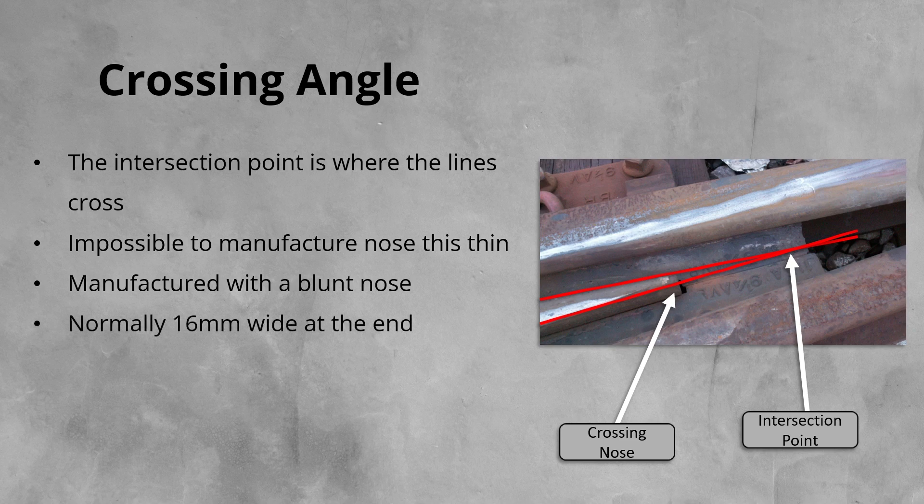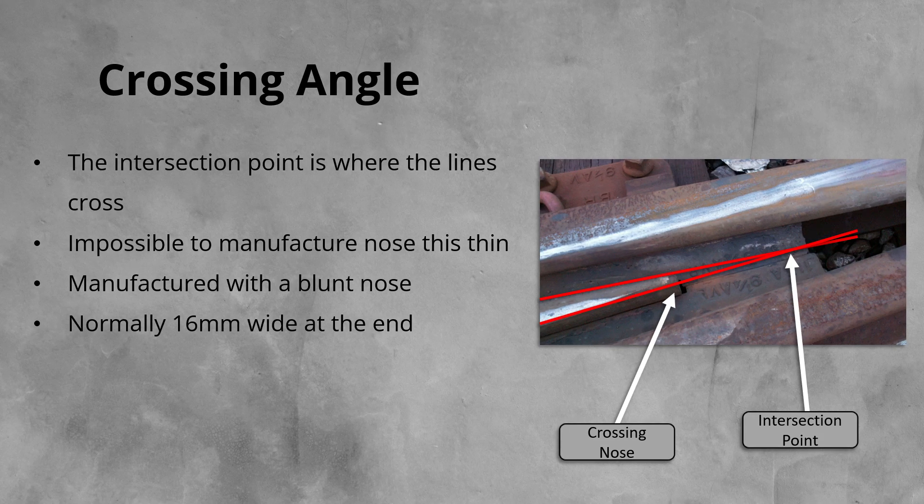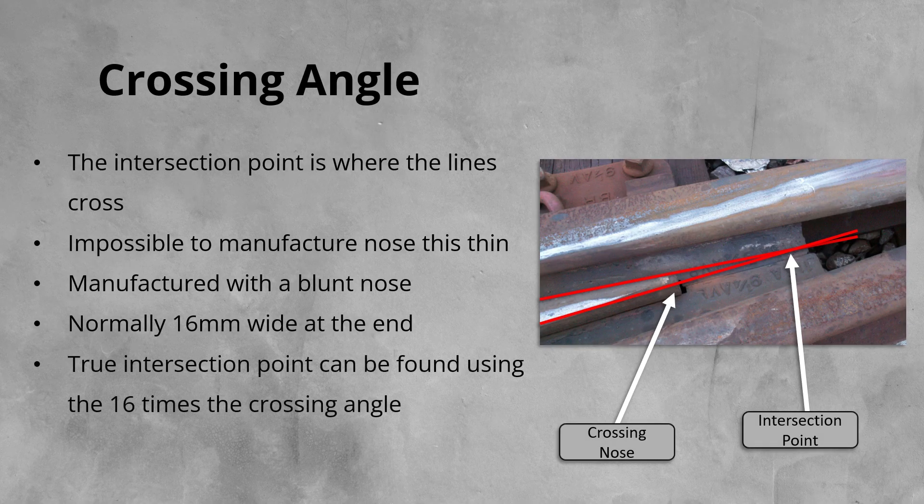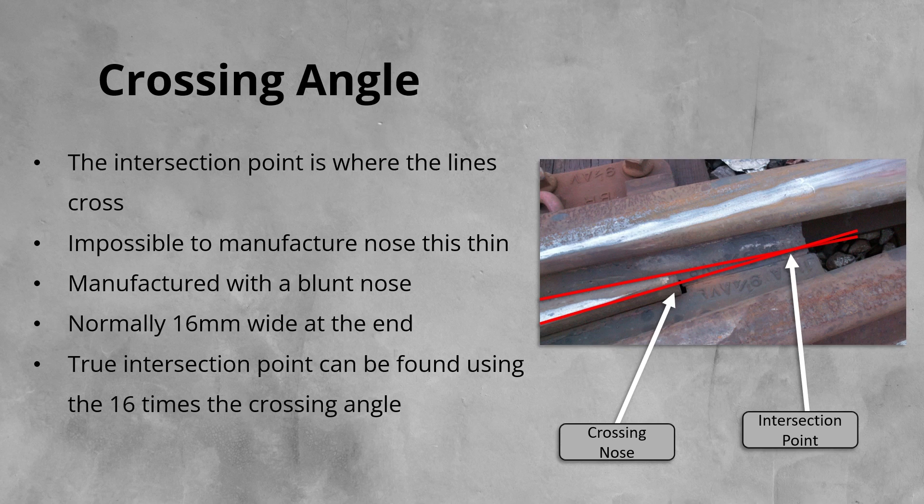This allows it to perform its function while also being constructible and maintainable. The true mathematical intersection point can be found using the crossing angle. The intersection point is a distance 16 times the crossing angle in front of the crossing nose.